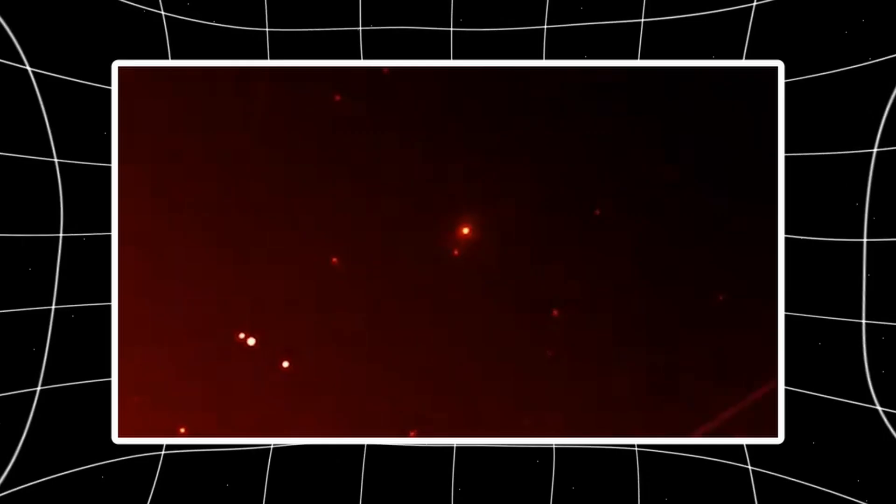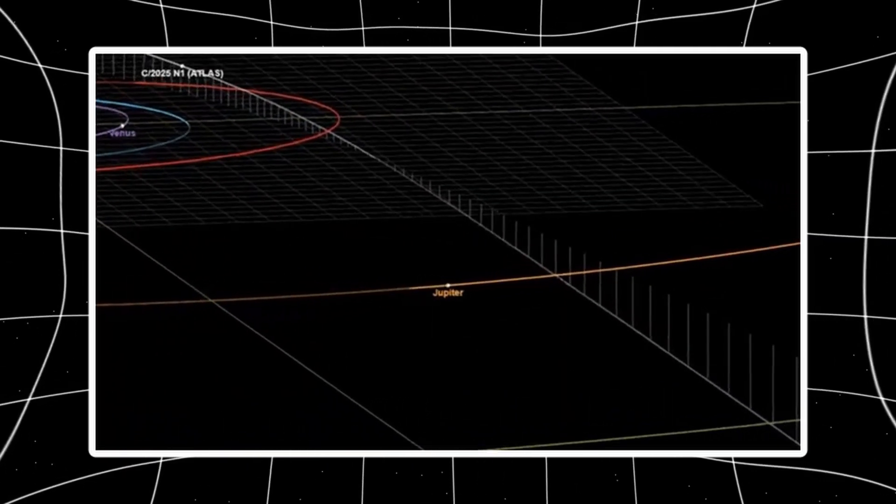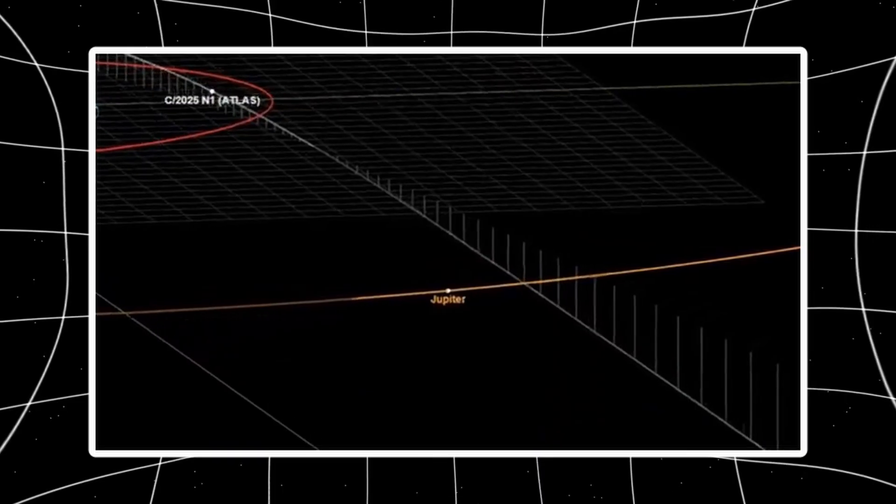Because on that day, 3i Atlas, the interstellar visitor racing through our solar system, will pass within 33.21 million miles of Jupiter.